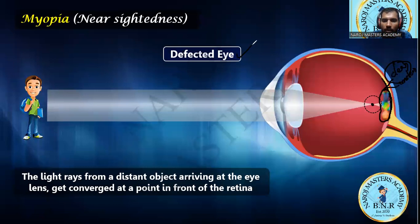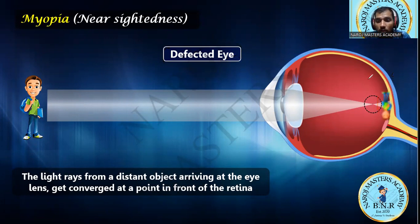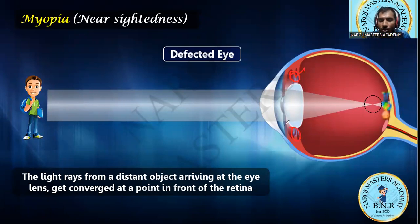For a normal eye we get a clear image, but for the defected myopic eye we do not get a clear image. So how do we correct this defect? Which type of lens should we use? The defect arises due to elongation of the eyeball and weakness of the ciliary muscles. When the ciliary muscles are weakened, this also causes a change in focal length of the eye lens.